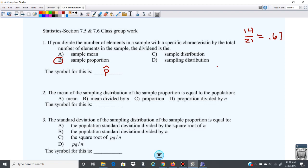Number two, the mean of the sampling distribution of the sample proportion is equal to the population mean, mean divided by n, proportion, or proportion divided by n.